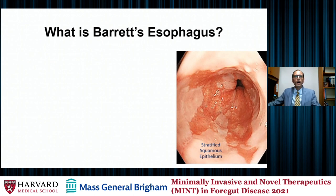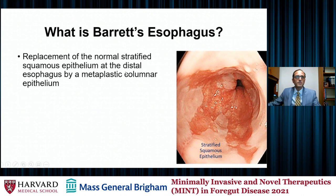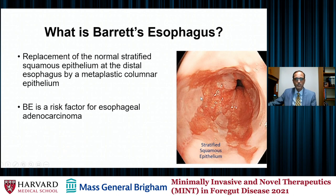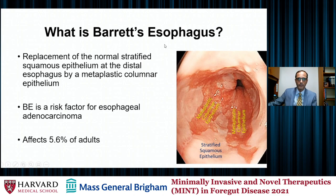So jumping out in front — what is Barrett's esophagus? It is replacement of the normal stratified squamous epithelium at the distal esophagus by a metaplastic columnar type epithelium. On the periphery of this picture you see the more pale color of the esophageal lumen and a pinker color in the middle — that pinker color is the metaplastic columnar type epithelium. Barrett's esophagus is a risk factor for esophageal adenocarcinoma, and it affects over 5% of adults in the United States. Here in the yellow you'll see the metaplastic columnar type epithelium that defines Barrett's.